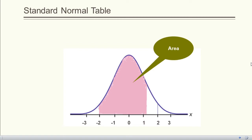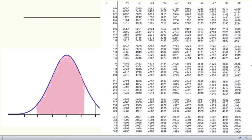The advantage of converting a normal random variable to a standard normal random variable is that using the z-score, we can calculate the area associated with a given interval of z-scores. This area is the probability — that is, we can find the probability of being within the interval. The probability for the standard normal variable is calculated and given in a table format called the standard normal table.